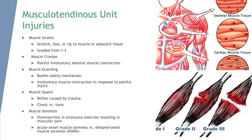A grade 3 strain involves a complete rupture of the muscle or musculotendinous junction. There is significant impairment initially with a great deal of pain that diminishes due to nerve damage. Pathologically, a strain is very similar to a contusion or sprain with capillary or blood vessel hemorrhage. The time required for healing can be lengthy.